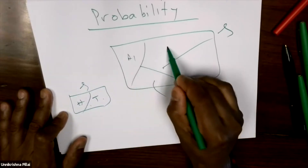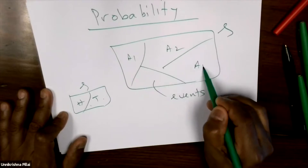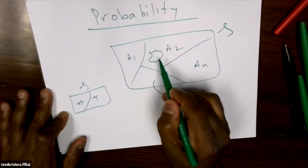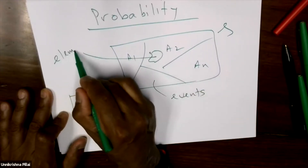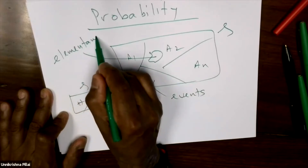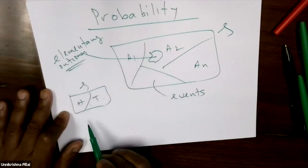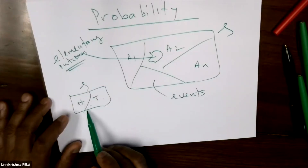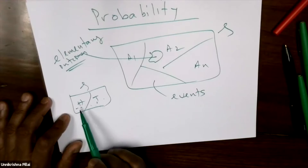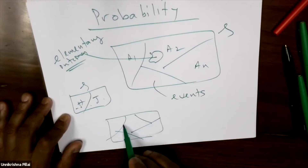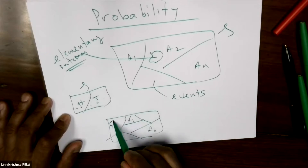There's nothing else. In general, there may be many outcomes and events. In particular, there are something called elementary outcomes. An elementary outcome is whatever the outcomes of an experiment are. If you toss a coin, there are two elementary outcomes: head or tail. If you toss a dice, there are six outcomes — face one, face two, up to face six. These are the elementary outcomes.